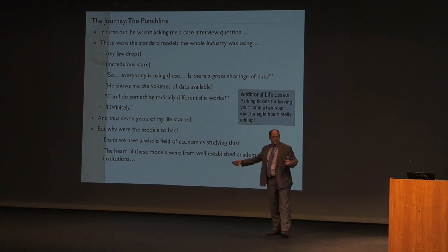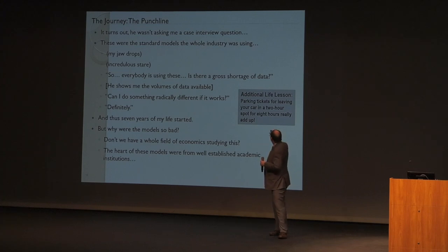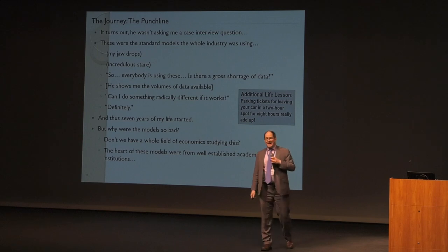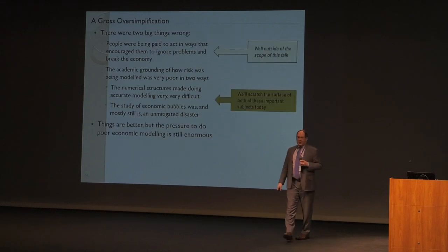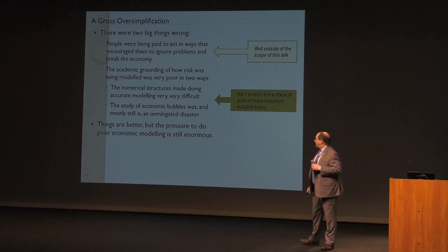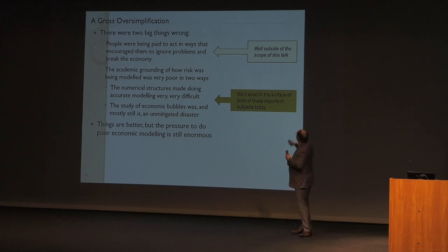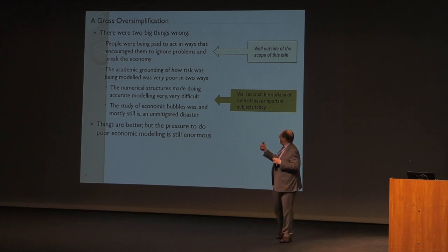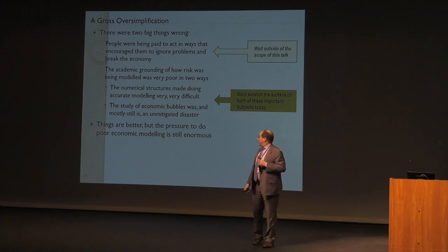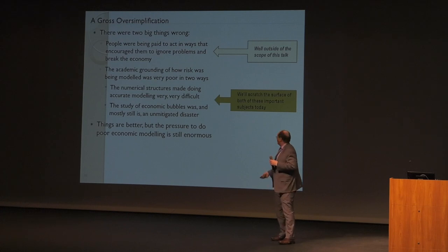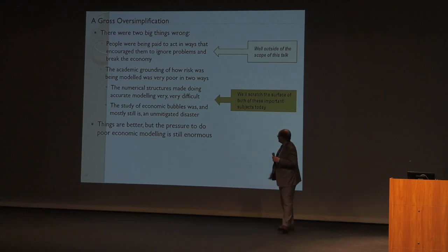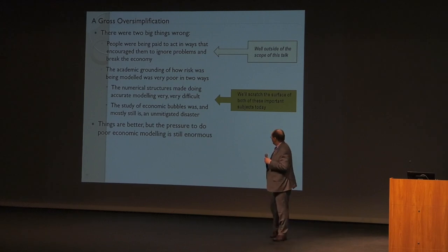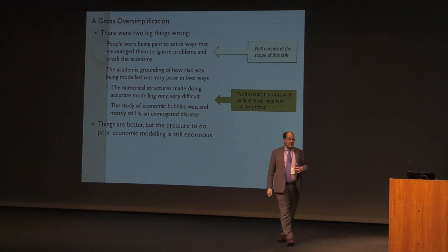Why were the models so bad? Don't we have a whole field of economics studying this? The heart of these models were from academic institutions. A gross simplification of what was wrong: there are a couple of big things that drove the crisis. People were being paid to act in ways that encouraged them to ignore problems and wreck the economy — and sadly this is largely still the case. But in the modeling way, the academic grounding was terrible. There were numerical structures that made doing it right very, very difficult. And the study of economic bubbles was — and mostly still is — an unmitigated disaster. Things are better now, but the pressure to do poor economic modeling remains enormous.